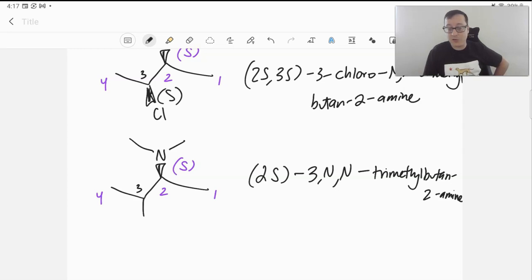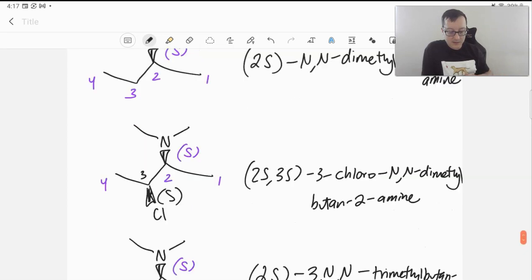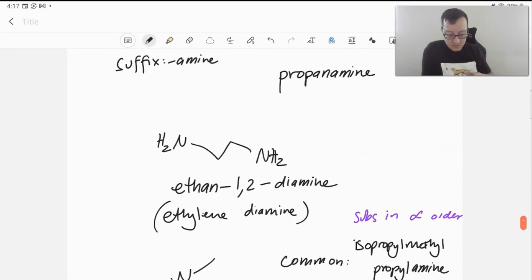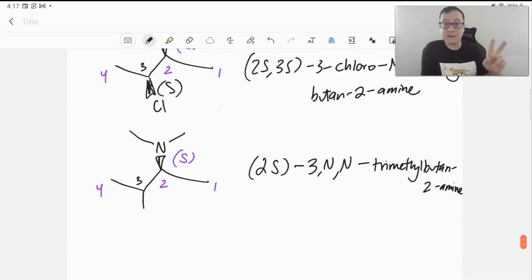So, lots of things to consider. But really, it's just incorporating everything else we've learned before. If you have things on your nitrogen, you'll indicate those as substituents with the locator number N. We're not going to worry about having multiple nitrogens with substituents on them. Diamines, yes, fine. Whatever. Diamine. No problem.